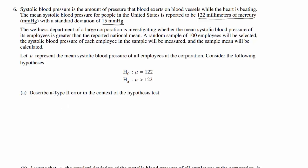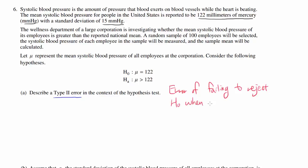Part A: Describe a type 2 error in the context of the hypothesis test. Type 2 error is the error of failing to reject the null hypothesis when the alternative hypothesis is true.